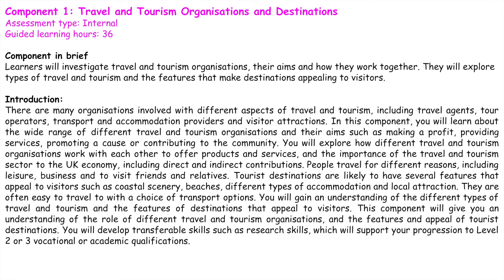Travel and Tourism is made up of three components. Component one is called Travel and Tourism Organisations and Destinations. Within this component, you will study how many different organisations are involved in different aspects of travel and tourism, including travel agents, tour operators, transport and accommodation providers, and visitor attractions.